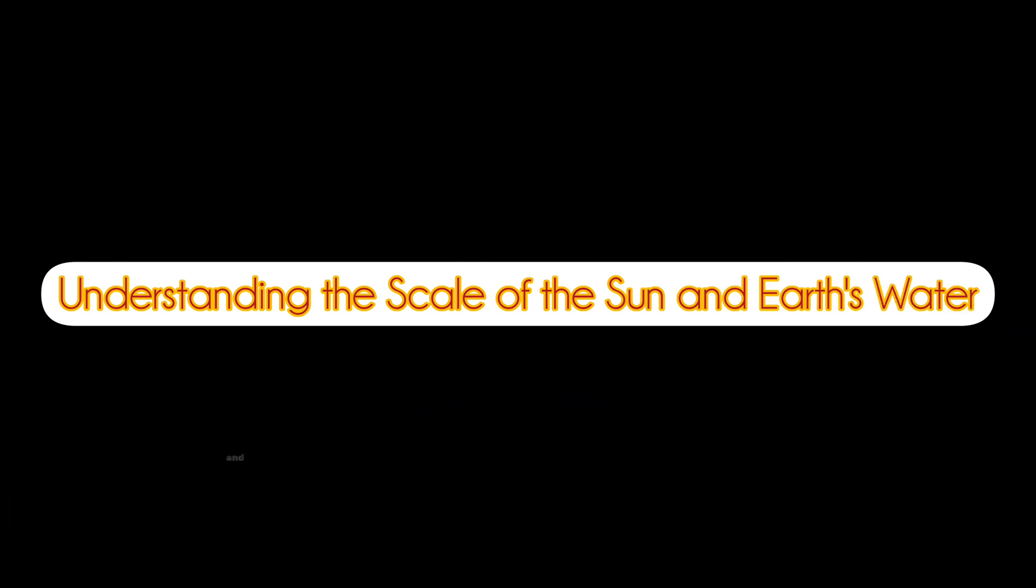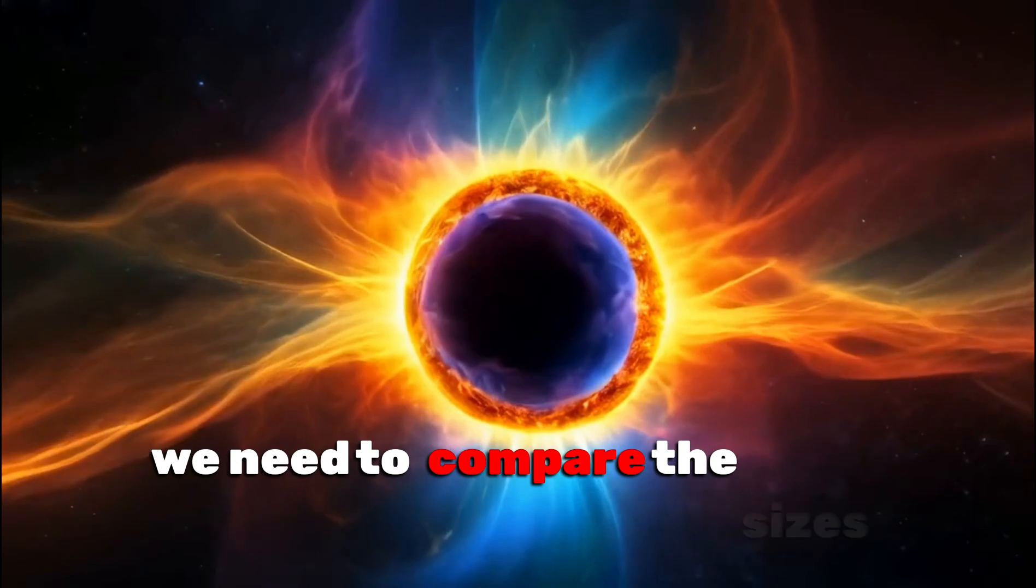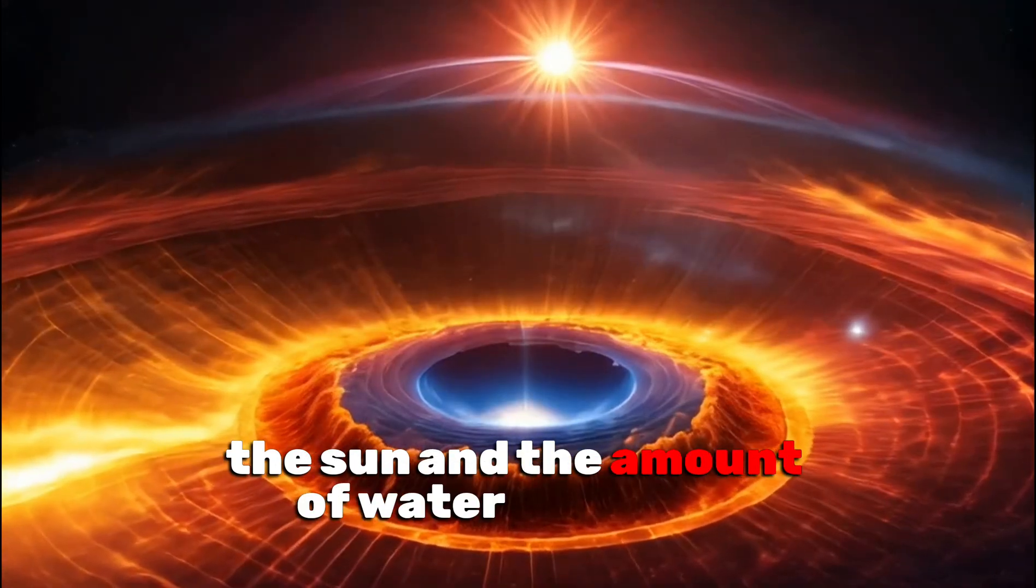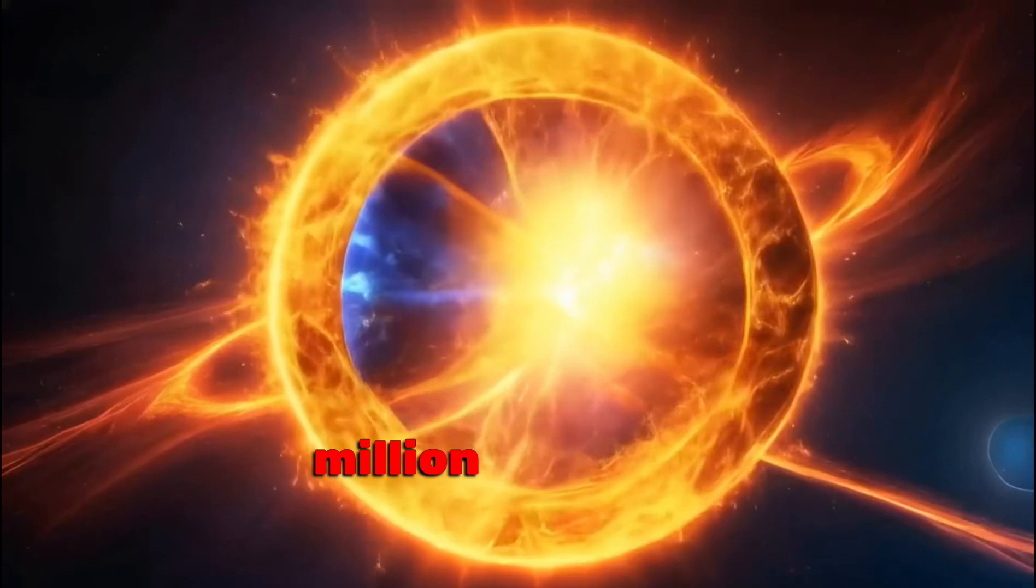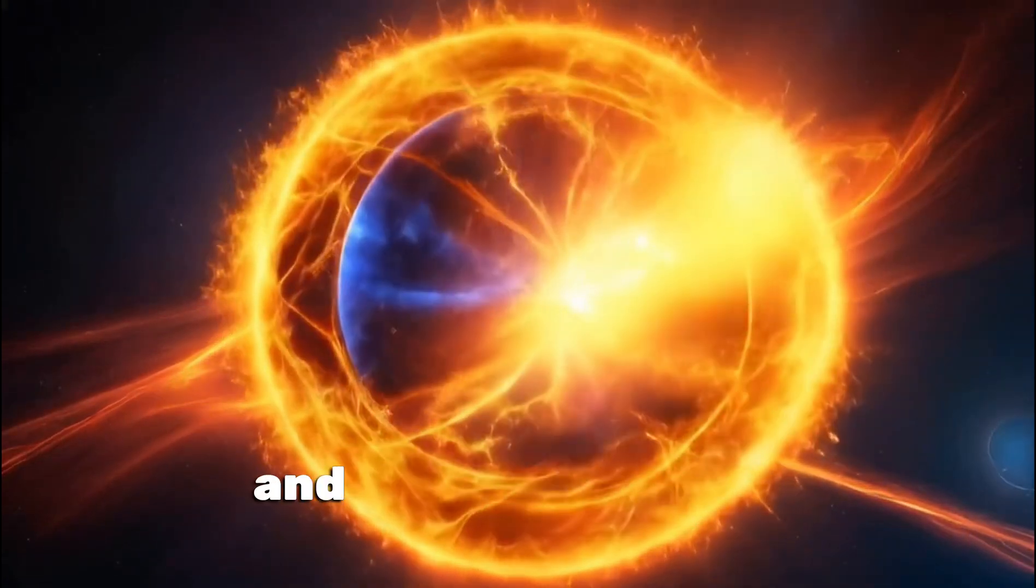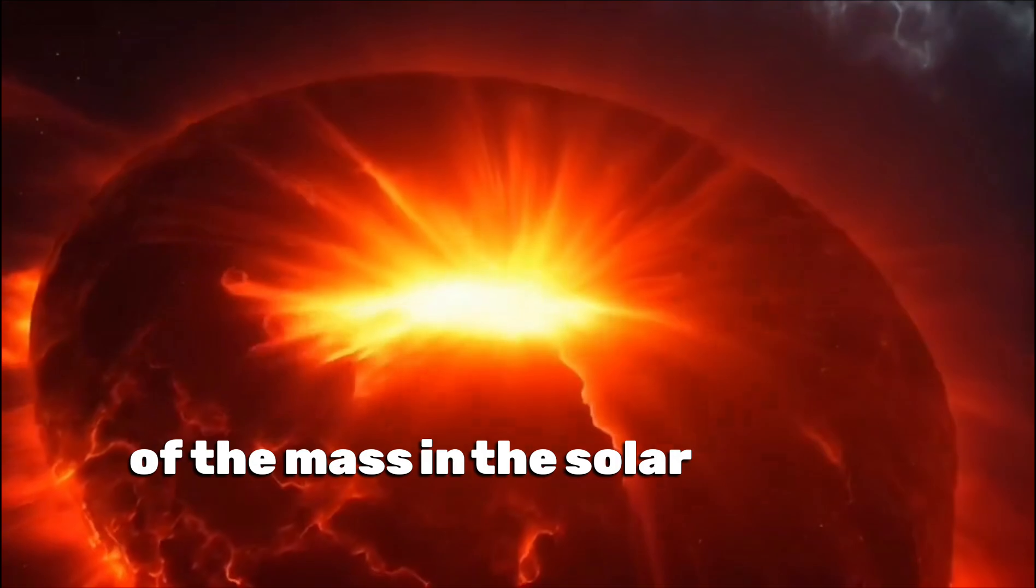Understanding the scale of the Sun and Earth's water. To grasp what would happen, we need to compare the sizes of the Sun and the amount of water on Earth. The Sun is about 1.3 million times the volume of Earth, and it contains 99.8% of the mass in the solar system.